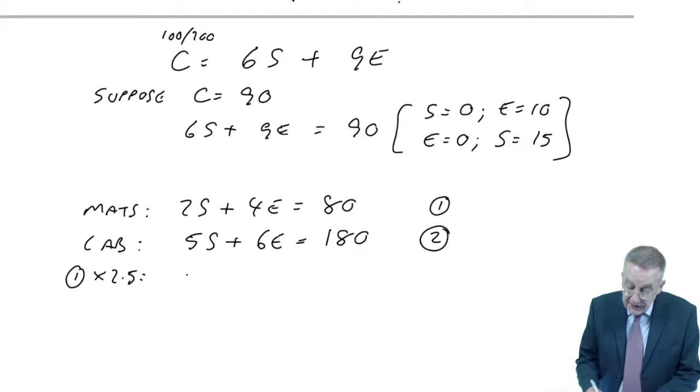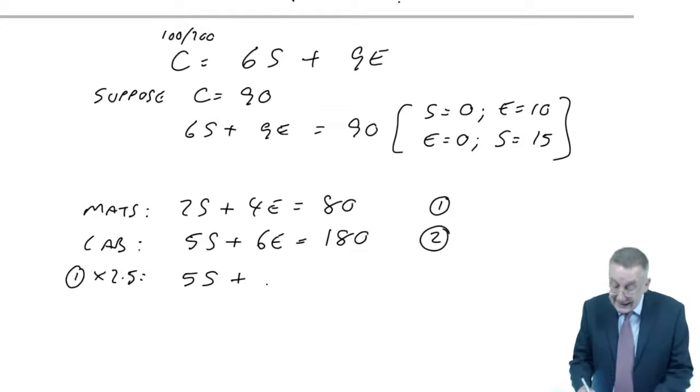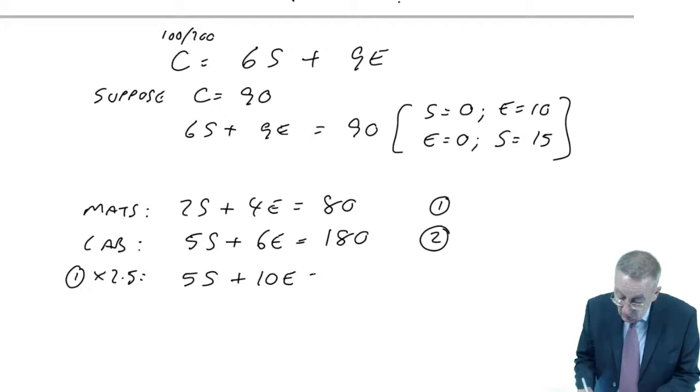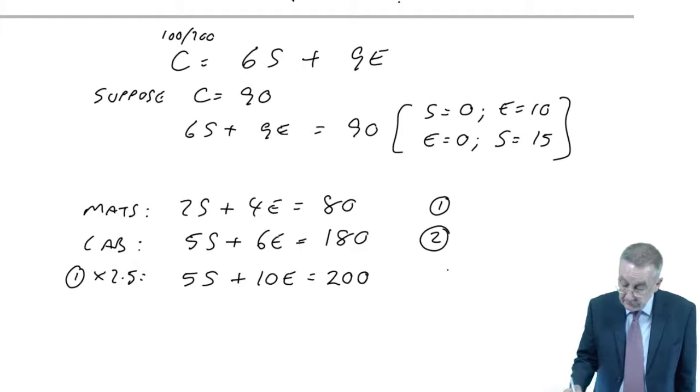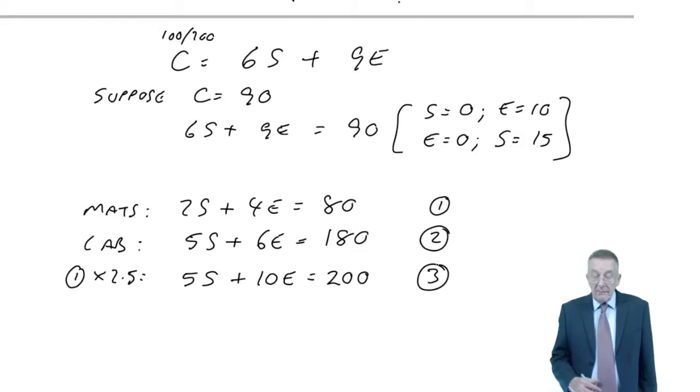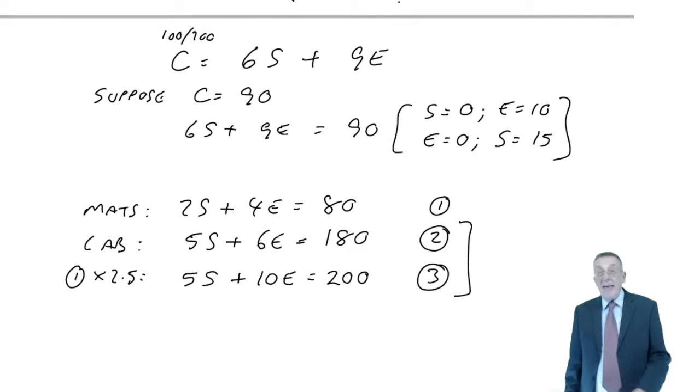Whatever you feel happiest with, as long as obviously you get the right answer. So it's only one answer. And what I'm going to do is this. If I number the equations one and two, I'm going to multiply the first equation by 2.5. I'll tell you why in a minute.